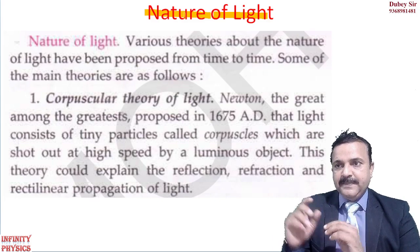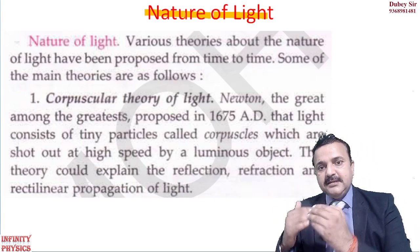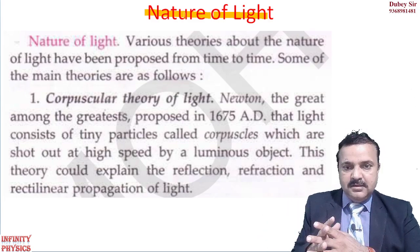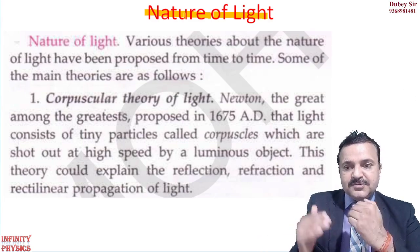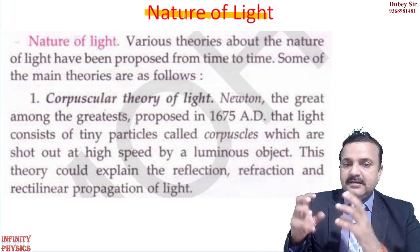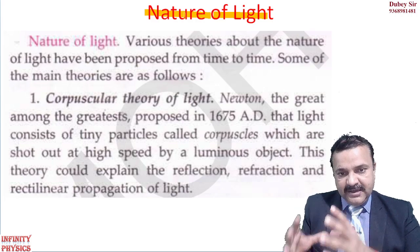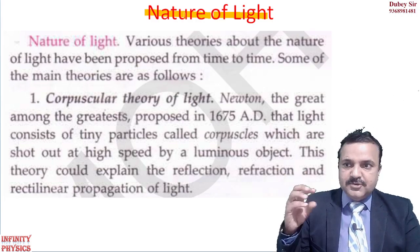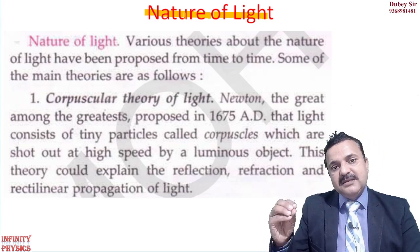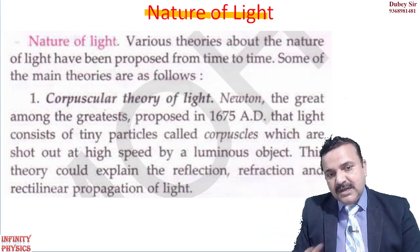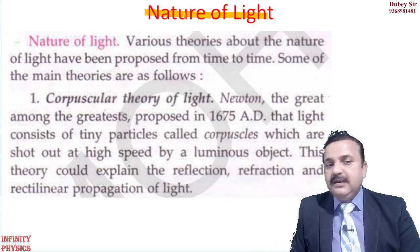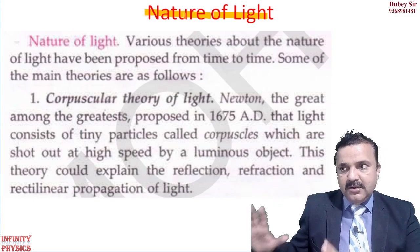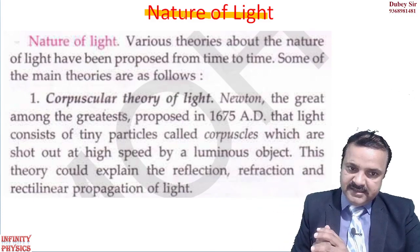Newton said that light travels in the form of particles, known as corpuscles. Different color corpuscles have different sizes, different wavelengths, and different frequencies. When you see a red-colored object, it means red color corpuscles are entering your eyes — that is why you see red color. So Newton's Corpuscular Theory says light has a particle nature.